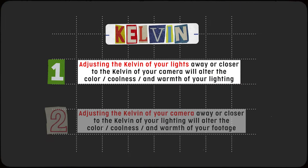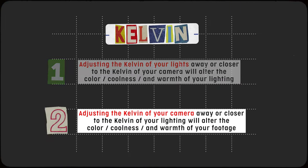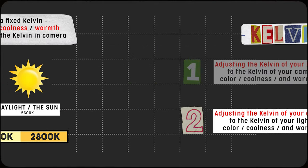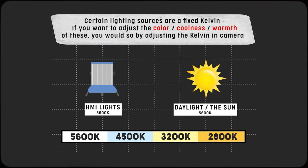Now for the second way to adjust Kelvin to get the look you're going for: adjusting the Kelvin in your camera. There are instances when you work with lights where the color temperature is fixed, like an HMI or the sun. Those are fixed at 5600 Kelvin no matter what.